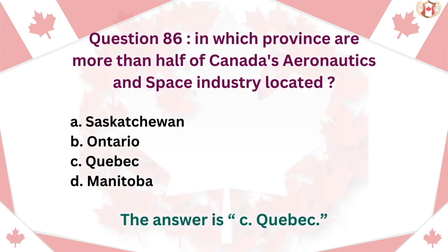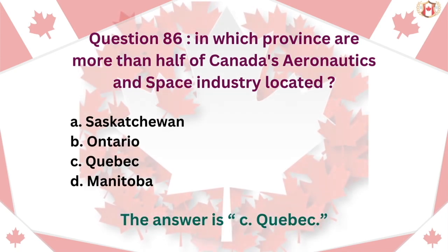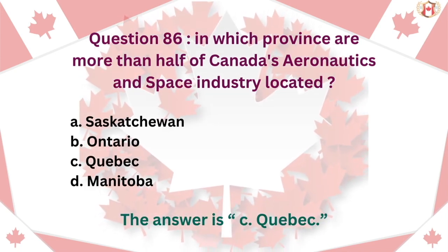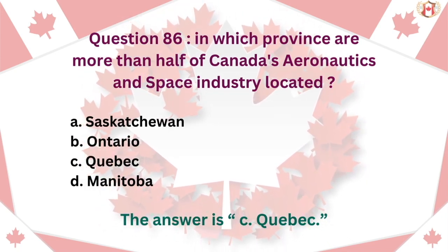Question 86: In which province are more than half of Canada's aeronautics and space industry located? A. Saskatchewan, B. Ontario, C. Quebec, D. Manitoba. The answer is C. Quebec.